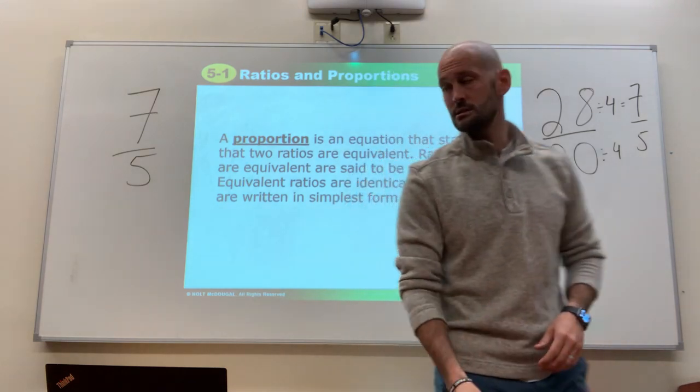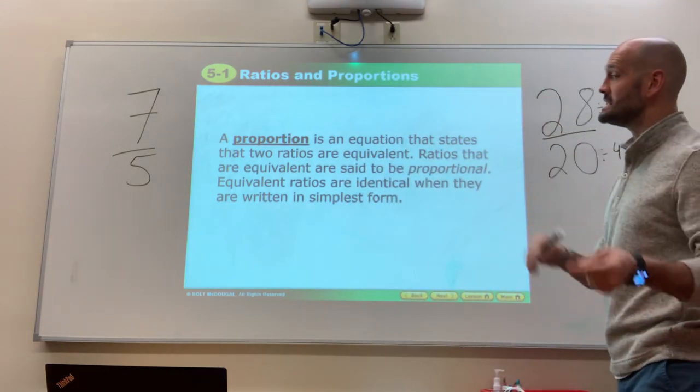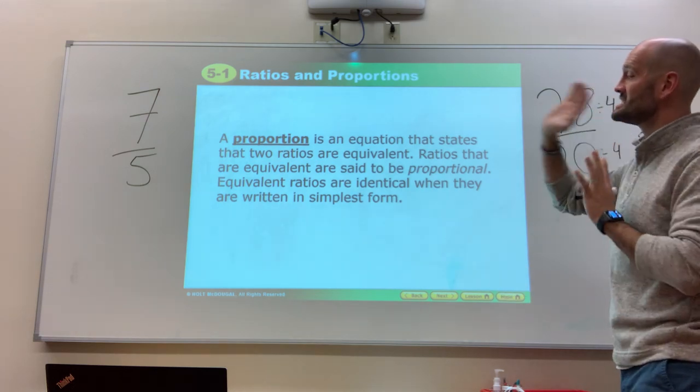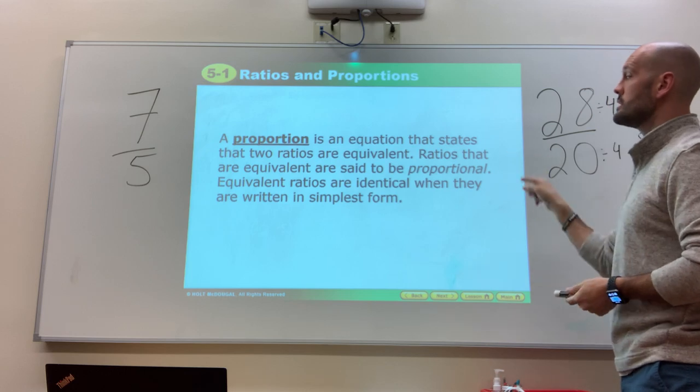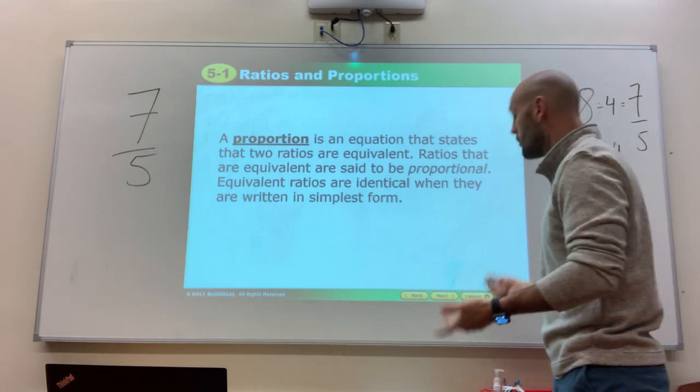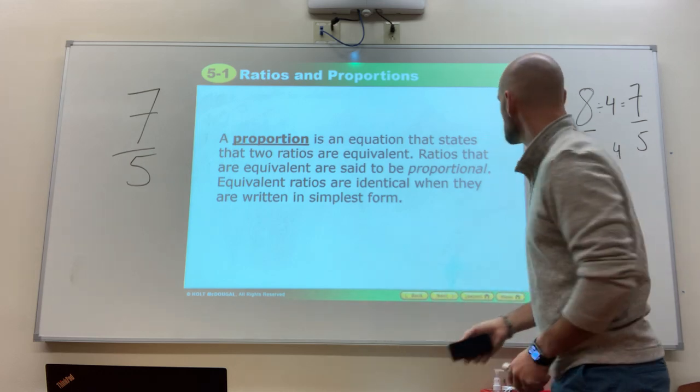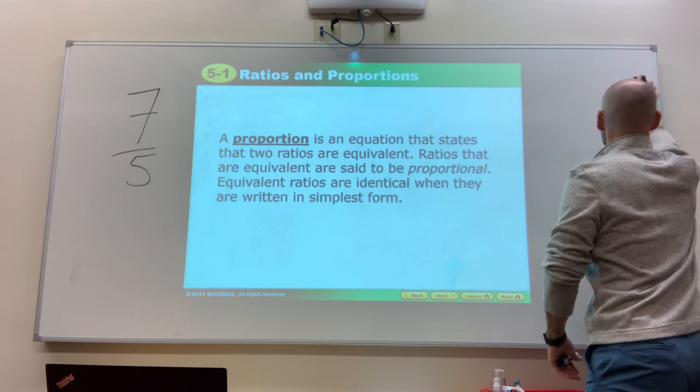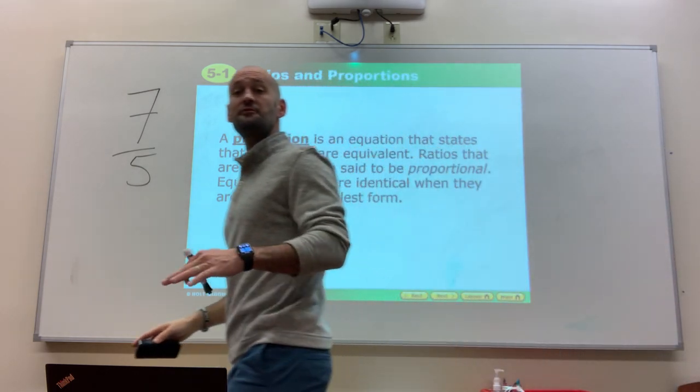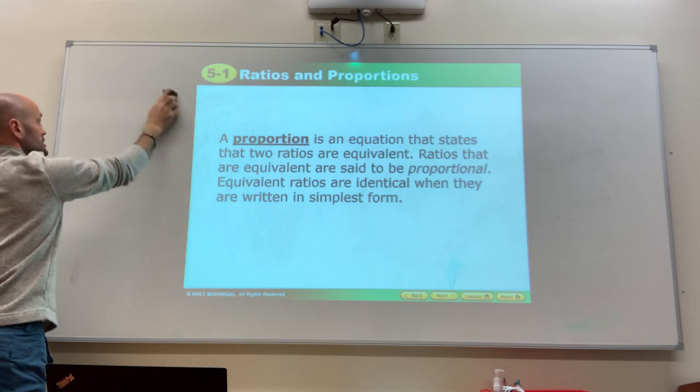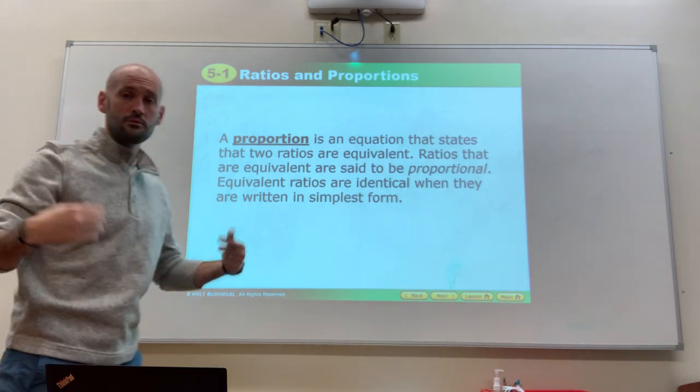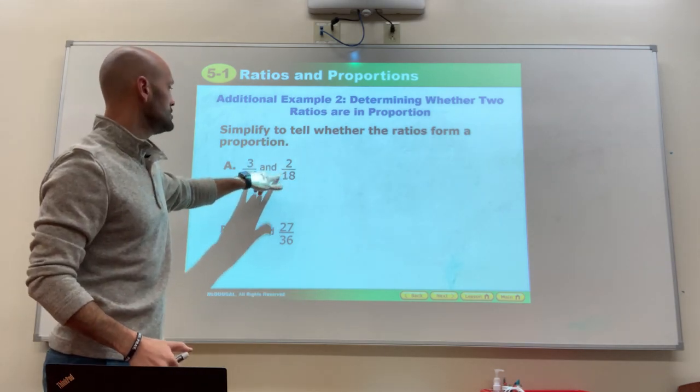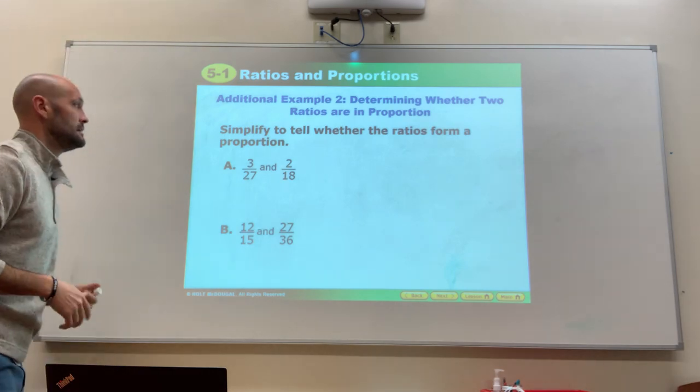Proportions. All right, here we go. Proportions. Proportion is an equation that states that two ratios are equivalent. Okay? It is something that, it's an equation that states two ratios are equivalent. Ratios that are equivalent are said to be proportional. Okay? They're in direct proportions. Equivalent ratios are identical when they are written in simplest form. So, simplest form. Think fractions. If it's all the way reduced, that's your simplest form. All the way reduced, that's your simplest form. So, let's see.